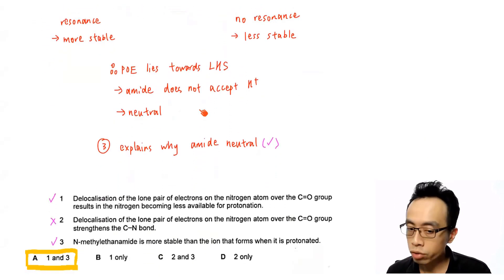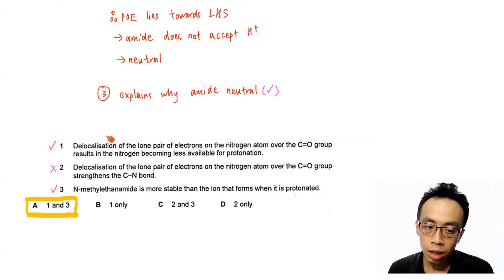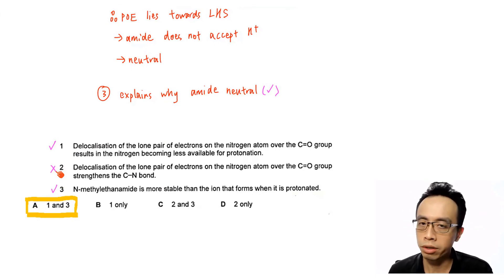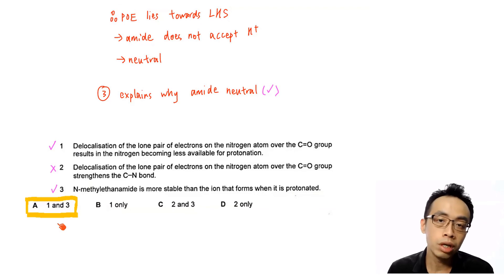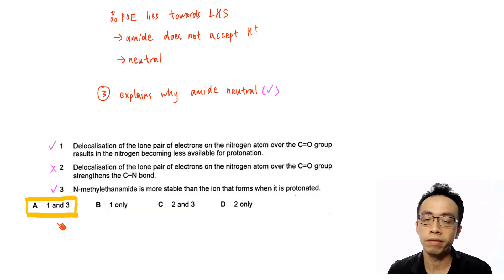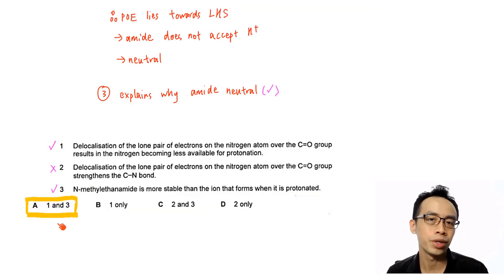So we've run through all three statements. Statement 1 is true and relevant. Statement 2 is true but not relevant, so we reject it. Statement 3 is relevant. Therefore, the answer to this question is option A — statements 1 and 3 are correct. That was the discussion for question 22. If you found this video useful, please give it a thumbs up, like, and subscribe to my YouTube channel for more weekly video lessons. That's all for now — I'll see you next week.